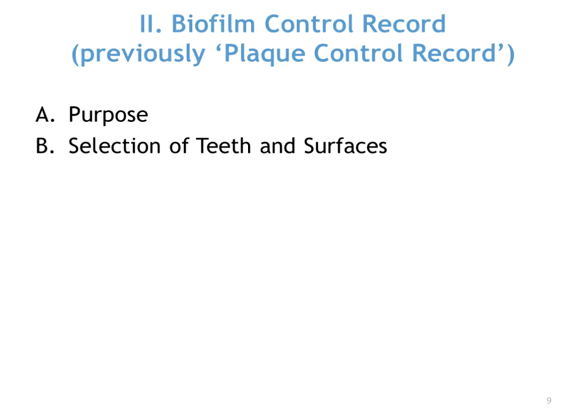There is also a biofilm control record. Usually six areas are assessed. You apply a disclosing agent — something you will be doing for your patients — and you examine each tooth surface to see if there's dental biofilm, marking down each surface with biofilm. Then you do a calculation: the number of surfaces with biofilm divided by the total number of surfaces examined (number of teeth multiplied by four or six), then multiplied by 100 to come up with a percentage. For example, if 26 teeth were scored and eight surfaces had biofilm, you would calculate accordingly.